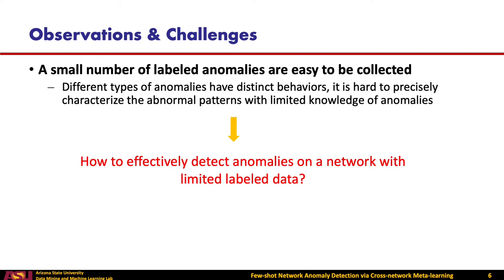The design of our framework is based on two observations. First, we should note that a small set of labeled anomalies are easy to be collected in real-world scenarios. They could be either from a deployed detection system or be provided by user feedback. But at the same time, the problem is that different types of anomalies have distinct behaviors. It is hard to precisely characterize the abnormal patterns with only limited knowledge of anomalies. So, our first challenge is how to effectively detect anomalies on a network with limited labeled data.